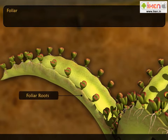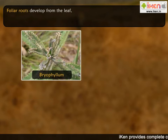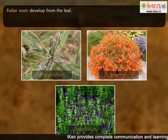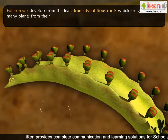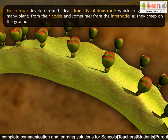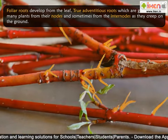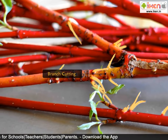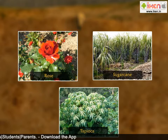Two, foliar roots develop from the leaf — examples include Bryophyllum and Begonia. Three, true adventitious roots are given off by many plants from their nodes and sometimes from the internodes as they creep on the ground — example: Indian pennywort. Adventitious roots are also produced from branch cuttings when they are put into the soil — examples include rose, sugarcane, and tapioca.